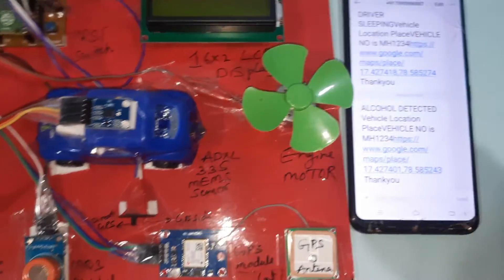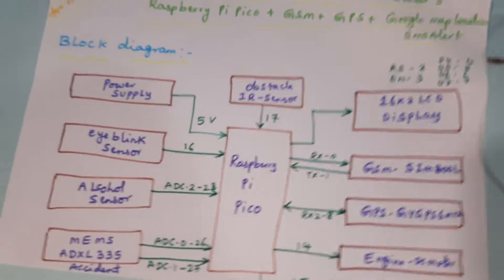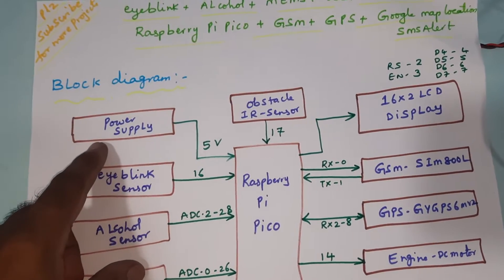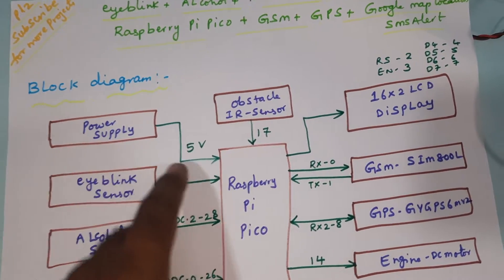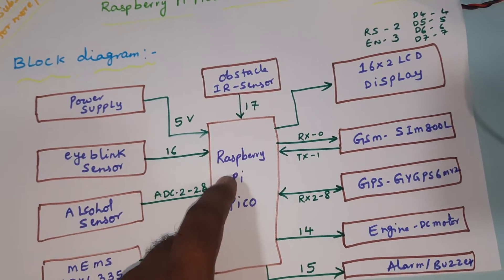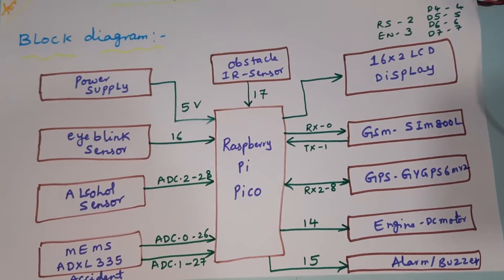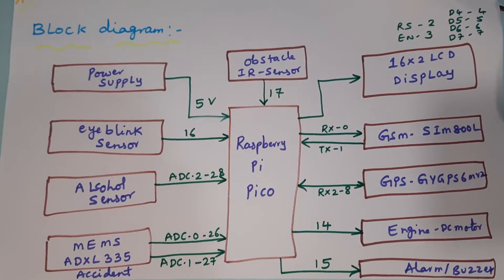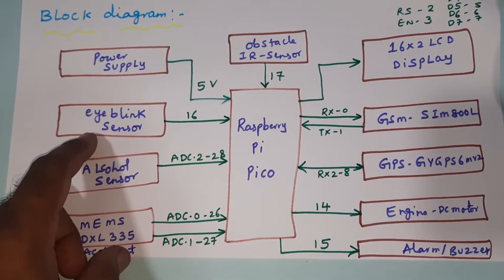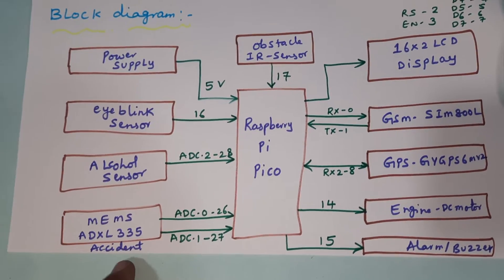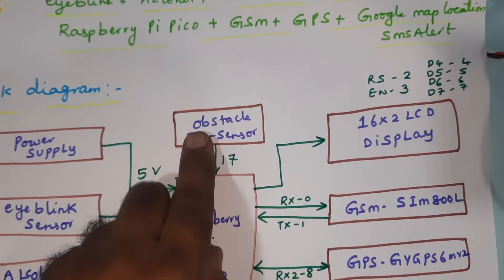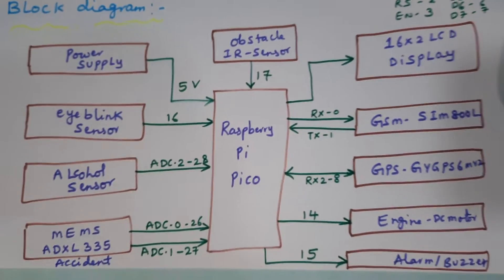Now let's look at the hardware block diagram. We are using a 0 to 9 volt adapter as the power source, which is given to a 5-volt power supply and the Raspberry Pi Pico RP2040 board. We are using a total of four sensors: iBlink sensor, alcohol sensor, ADXL335 MEMS accelerometer sensor, and obstacle sensor.